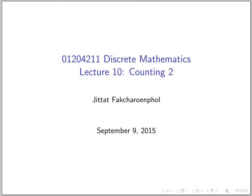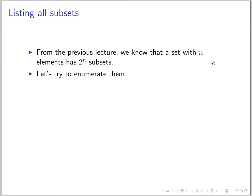We come back to talk about counting. Last time we proved that if we have a set with n elements it has two to the n subsets. So now today let's not just try to count them — let's try to enumerate them. What I mean by enumerate is that we want to list the subsets of the set.